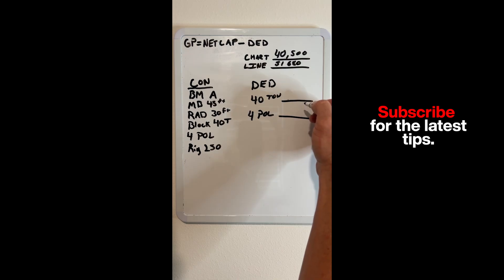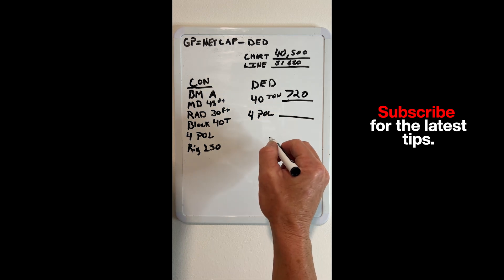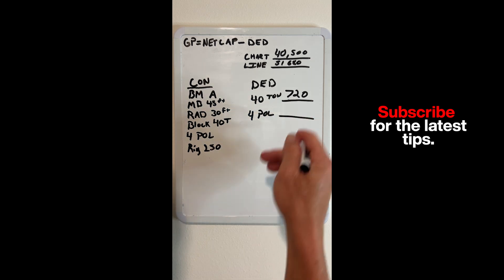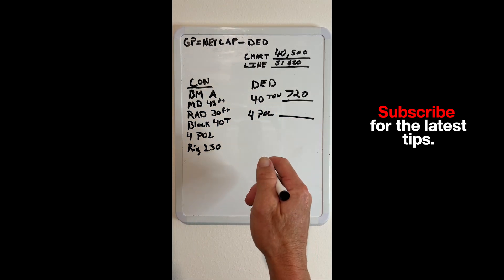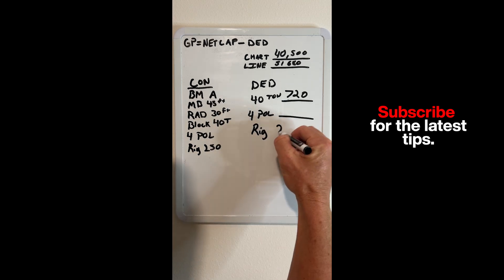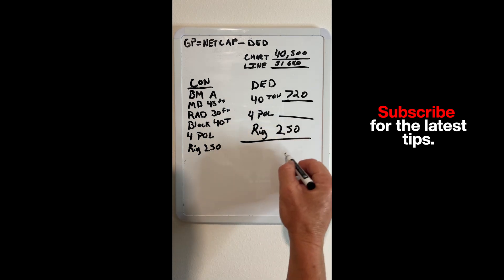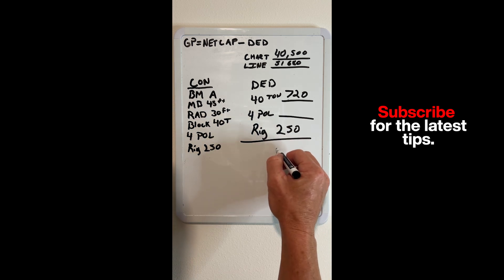So we want to subtract for our block, which is 720, and our four parts of line are being used, so we're not going to do any deduction for that. Our rigging is 250. Now we're going to add this up—our 40 ton block and our rigging—and that's going to give us 970.